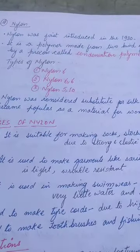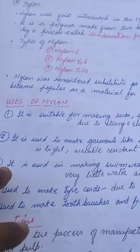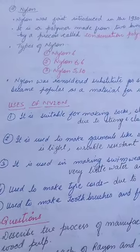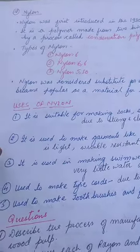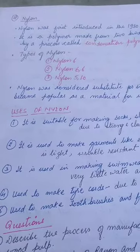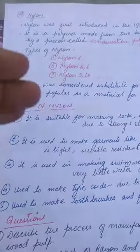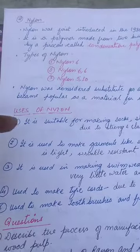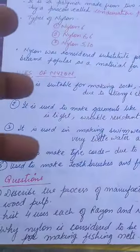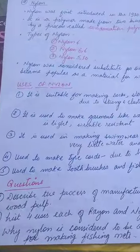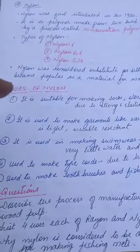We will now discuss the uses of Nylon. Number one: Nylon is a strong and elastic material; it is used in making socks, stockings, tracksuits, combat uniforms, and parachutes. It is also lightweight, wrinkle-resistant, and easy to wash, so it is used in making garments like sarees. It absorbs very little water and dries quickly. Due to its high strength and durability, it is used in making tire cords.